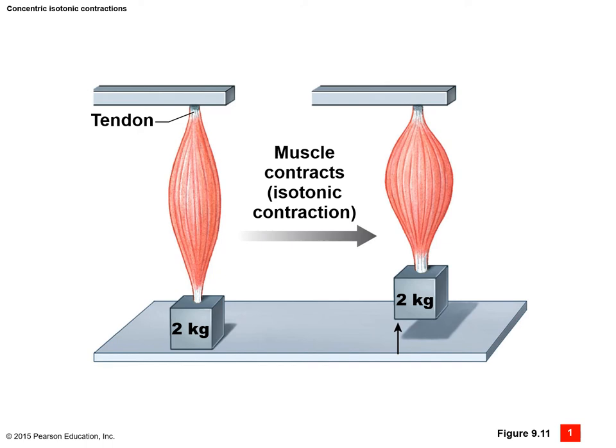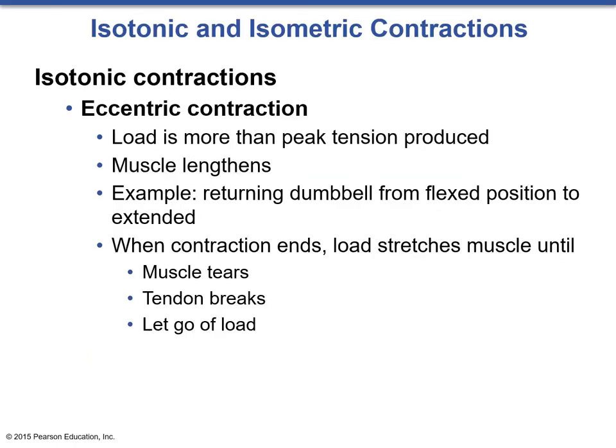A muscle attached on both sides to a two-kilogram weight contracts, shortens, and lifts the weight—this is an isotonic concentric contraction. Eccentric is the opposite of concentric: where concentric shortens, eccentric lengthens. Here, the load is more than the peak tension produced and so the muscle lengthens. An example is returning the dumbbell from the flexed position to extended, controlling the negative, or running downhill.